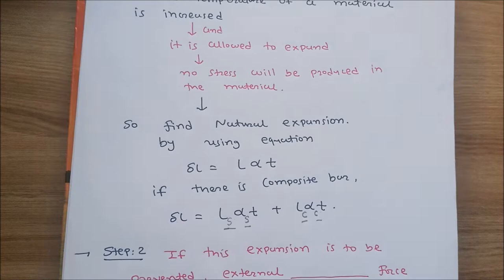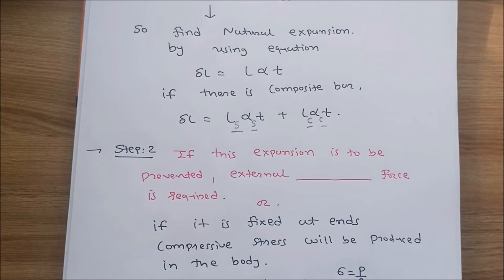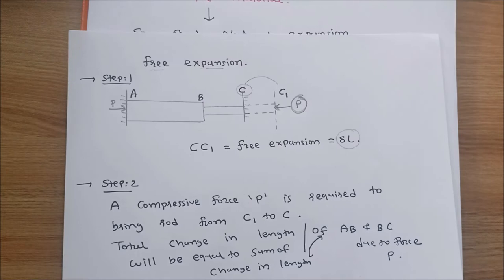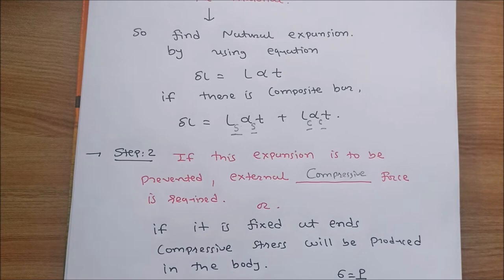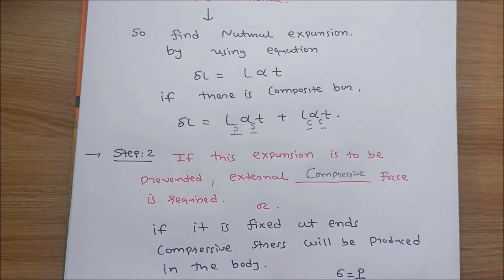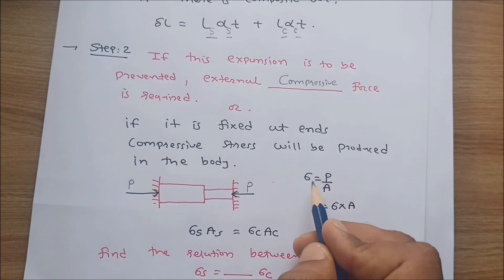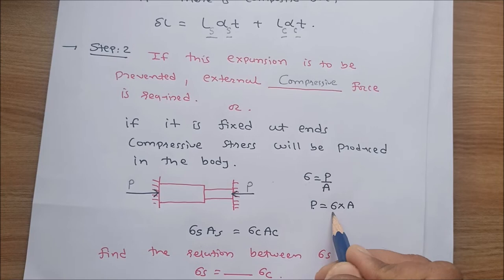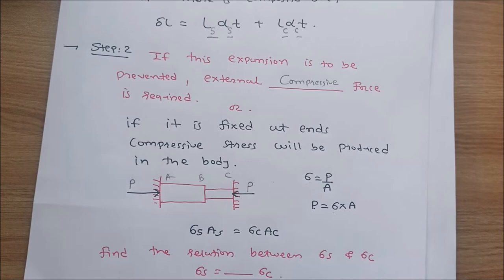In step number 2: if this free expansion is to be prevented, an external compressive force is required. So here we apply a compressive force to prevent this expansion, and this compressive force in both members will be P. For both members AB and BC, this force is P.